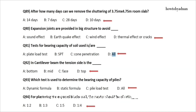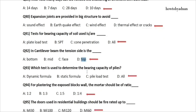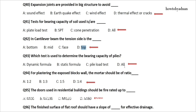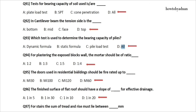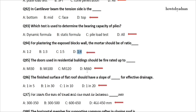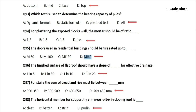Question 92: In a cantilever beam, the tension side is the? The answer is option D: Top. Question 93: Which test is used to determine the bearing capacity of piles? The answer is option D: All. Question 94: For plastering the exposed block wall, the mortar should be of ratio? The answer is option D: 1 to 4. Question 95: The doors used in residential buildings should be fire rated up to? The answer is option D: 60 minutes. Question 96: The finished surface of a flat roof should have a slope of how much for effective drainage? The answer is option D: 1 in 20.